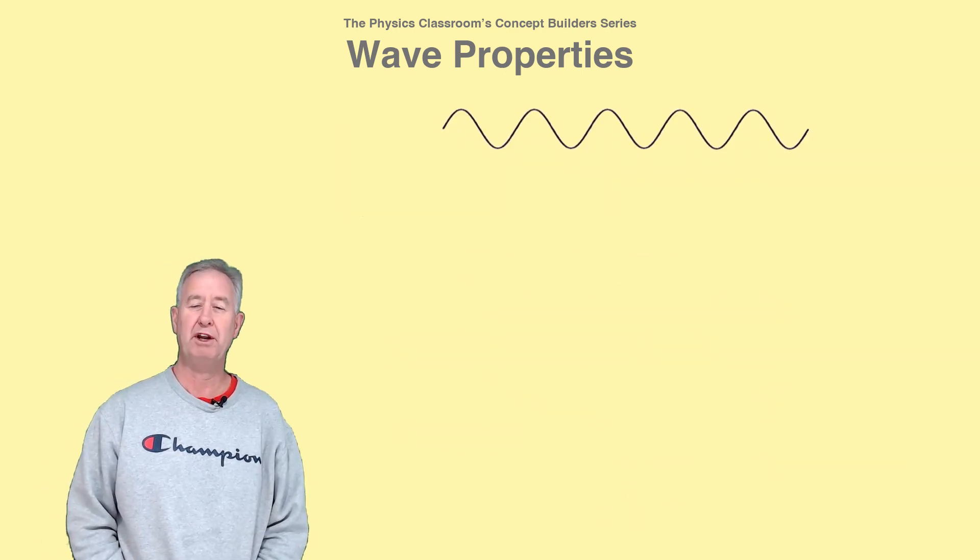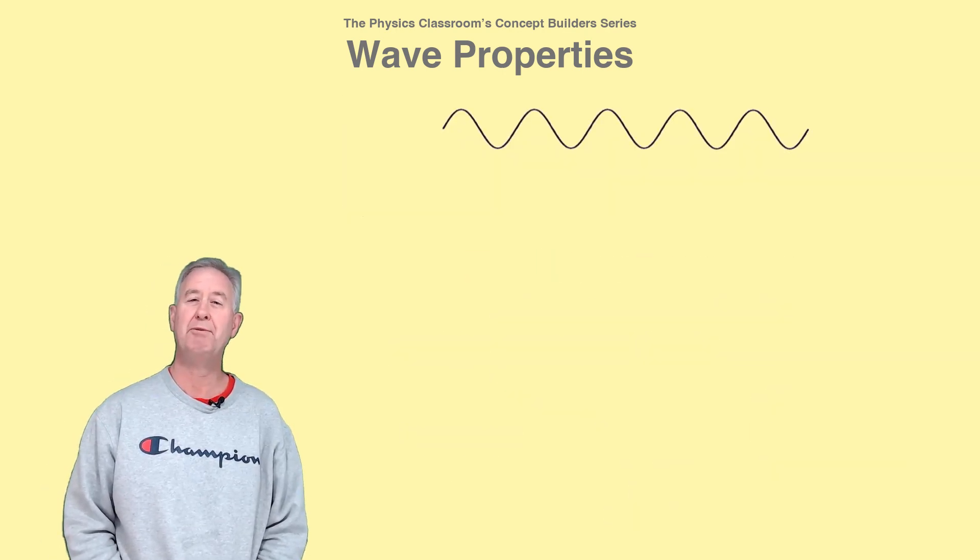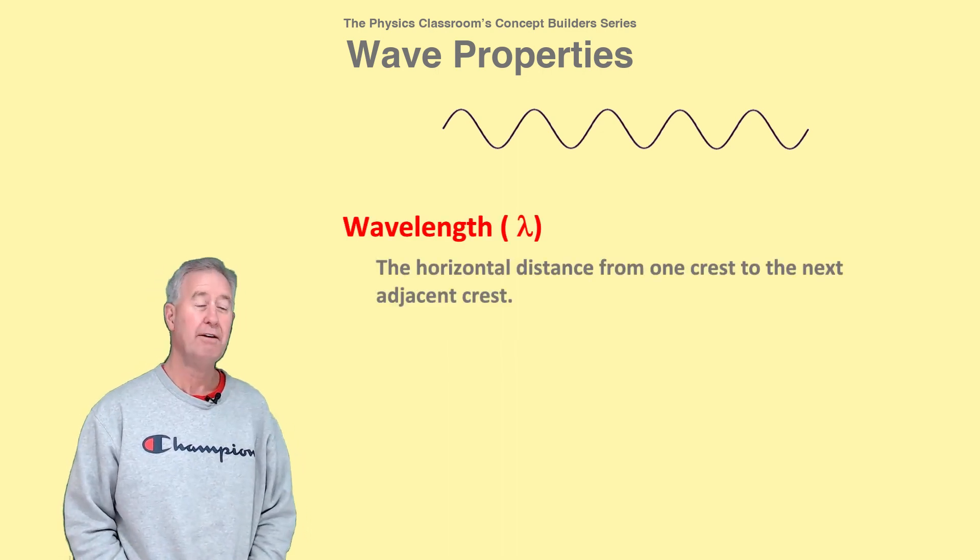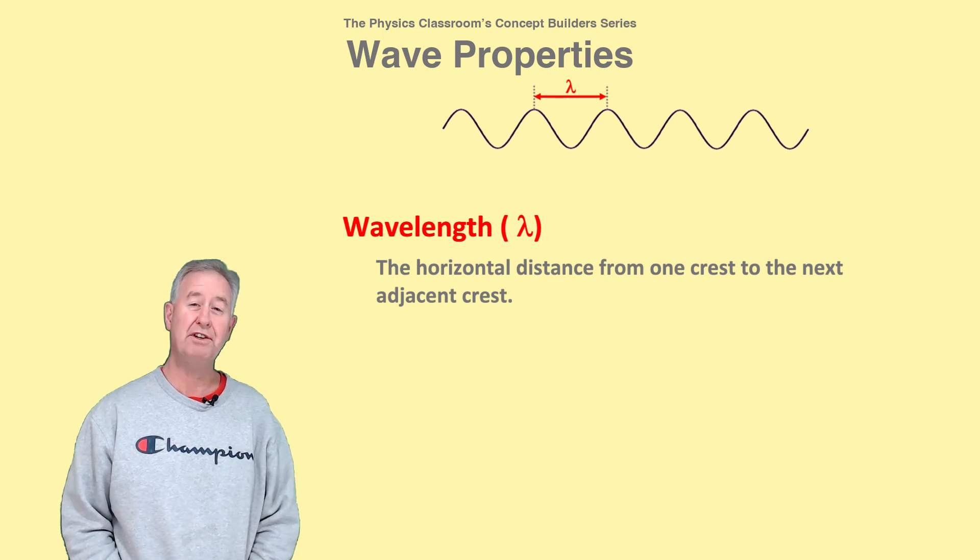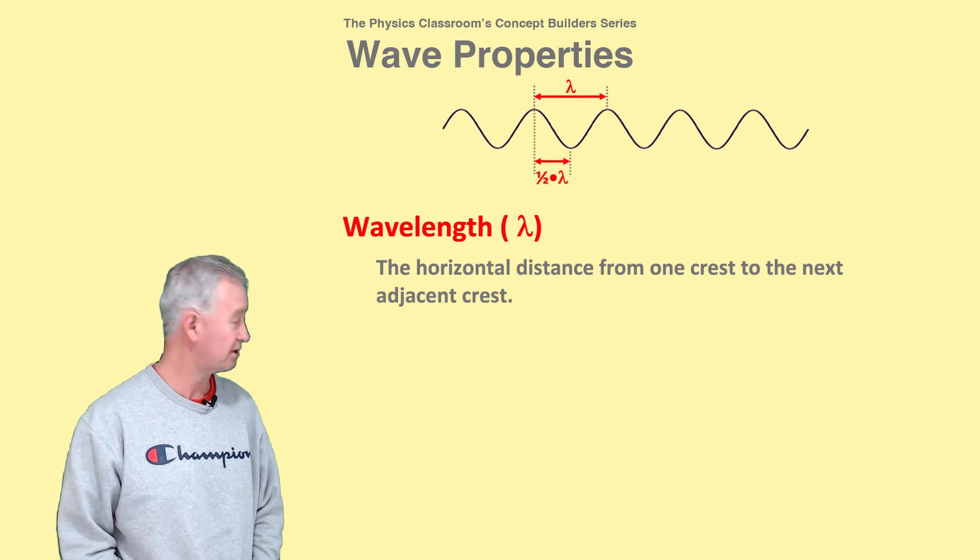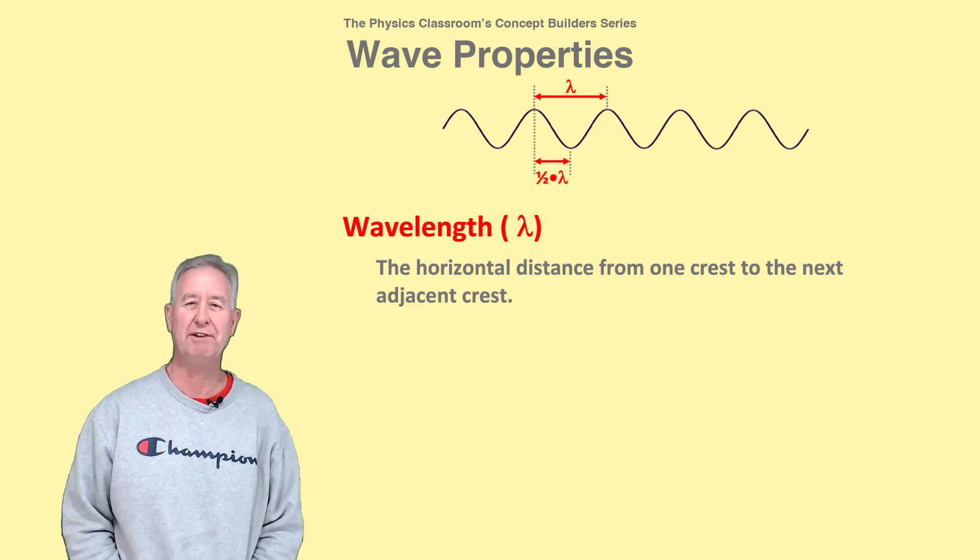As the particles vibrate, a pattern is established along the medium. The wavelength is the length of the repeating pattern. For this diagram, the horizontal distance from one crest to the next adjacent crest is one wavelength, and the distance from one crest to the next adjacent trough is half of a wavelength.